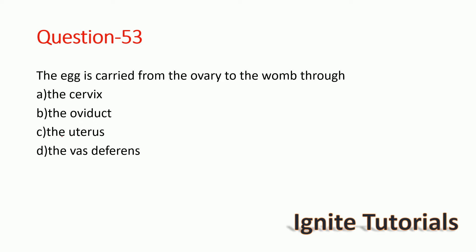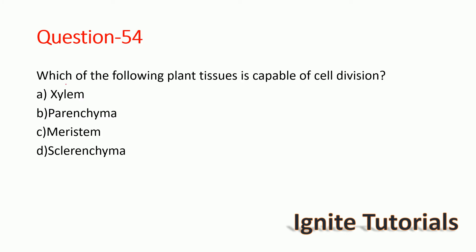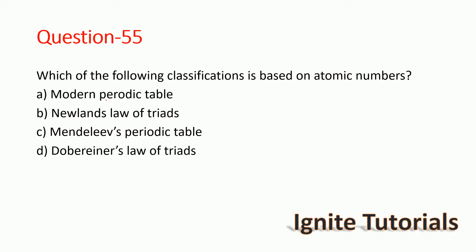The correct answer is the oviduct — the egg is carried from the ovary to the womb through the oviduct, so option B is correct. Question 54: Which of the following plants undergoes cell division? The correct answer is meristem, so option C is correct.